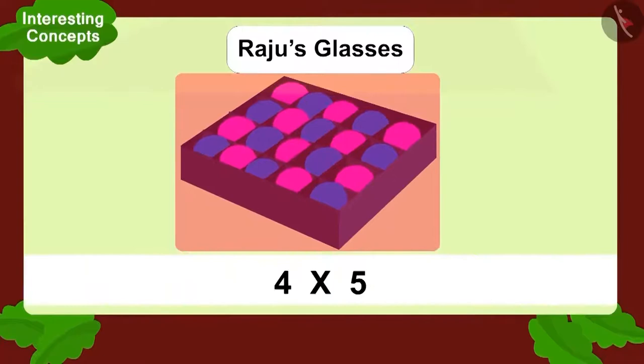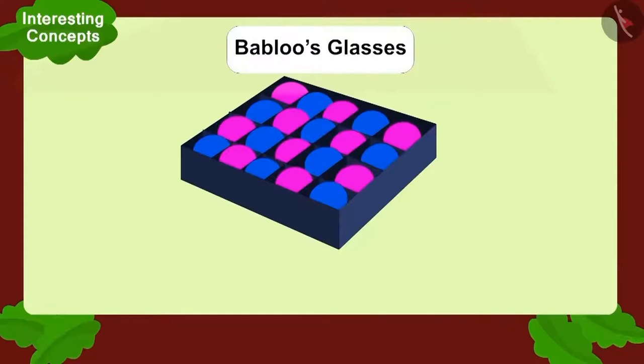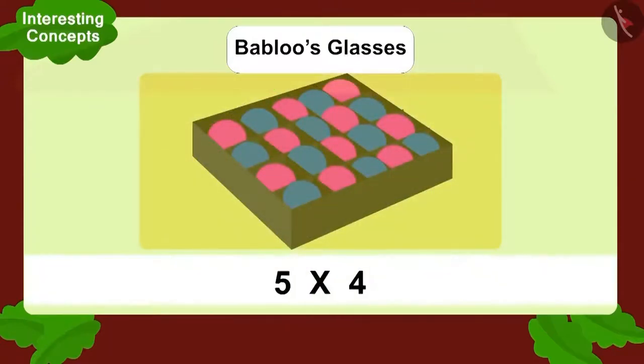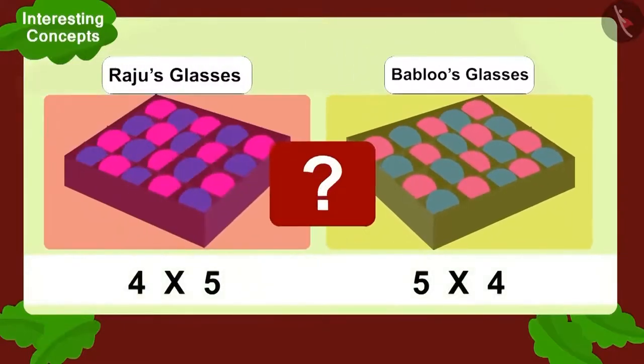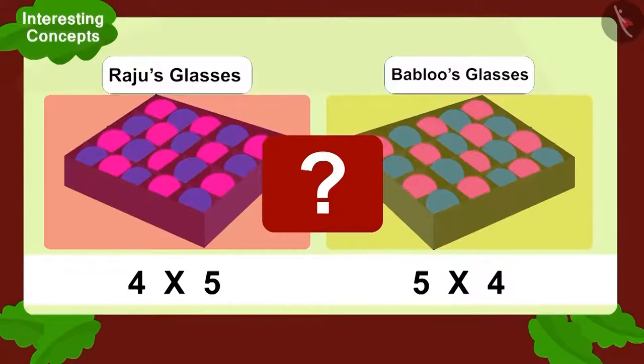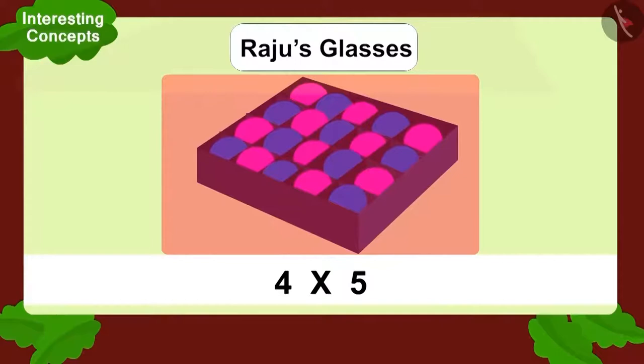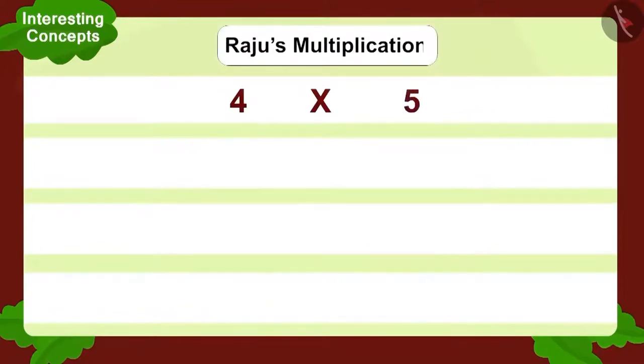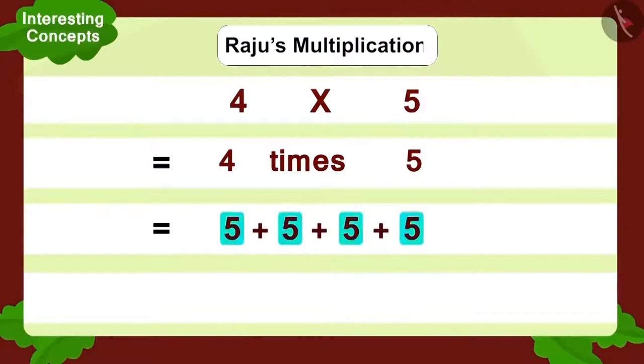Raju wore his glasses and looked at the box. He saw a multiplication like this. Now, Bablu wore his glasses and looked at the box. He saw a multiplication like this. Is this possible? Is the multiplication seen through Bablu's and Raju's glasses the same? Come, let's look at Raju's multiplication. Here, Raju saw five horizontal compartments and four balls in each compartment. Four multiplied by five. Can you write this in another way? Four times five. Now, how will we write it in addition form? By adding five four times like this. So, what is the total number of balls? Twenty.